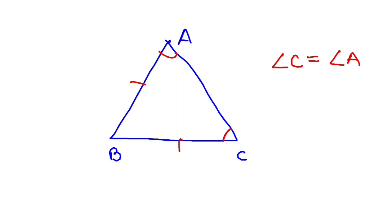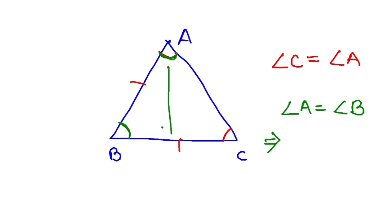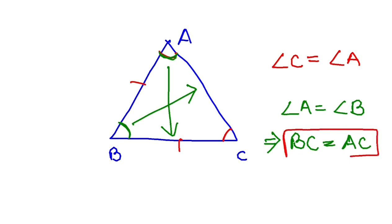Now let's take the second condition. If you are given that angle A is equal to angle B, then which two sides will be equal? The opposite of angle A is BC, and the opposite of angle B is AC. So you will have BC equal to AC. Once you know these two properties, you can solve questions 8, 9, and 10. In the next video, I shall discuss those questions — so let's meet in the next video.